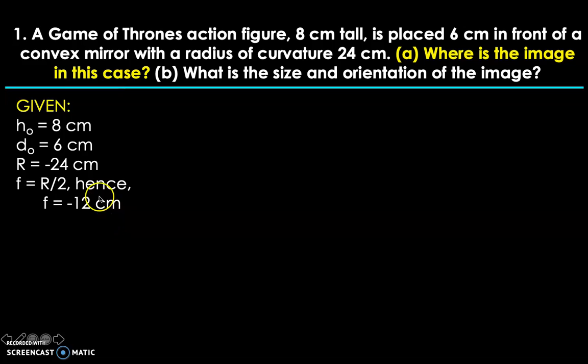Now for focal length, it's half of the radius of curvature, so it will be negative 12. By the way, some problems will directly give you the appropriate sign for the radius of curvature or focal length. But for a problem like this, where they're simply giving you the magnitudes without the appropriate sign yet, you have to be extra careful. For radius of curvature, make it negative for convex mirrors. Same if the focal length is given.